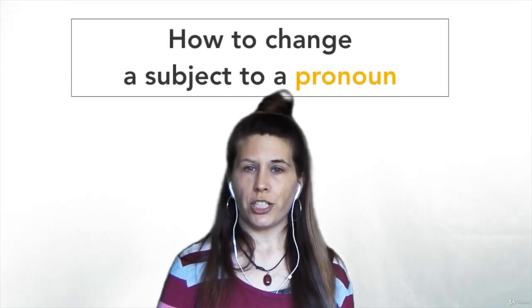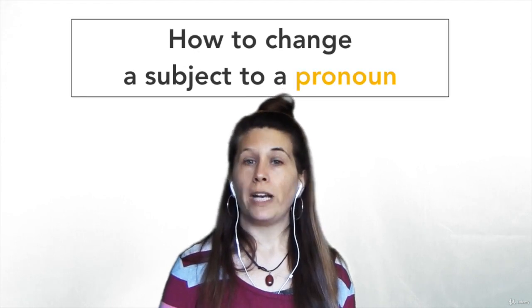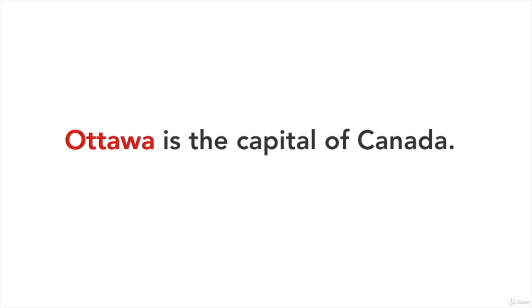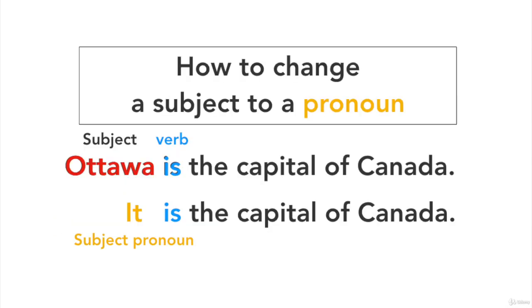How to change a subject to a pronoun. We need a sentence. Ottawa is the capital of Canada. Ottawa is the subject. Is is the verb. Ottawa is a place, so we replace it with it. It is the capital of Canada.